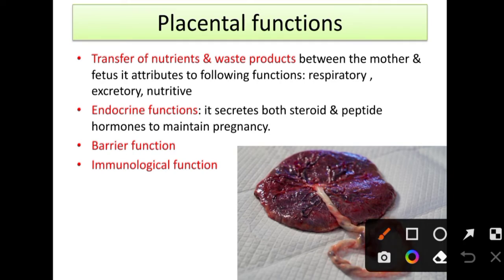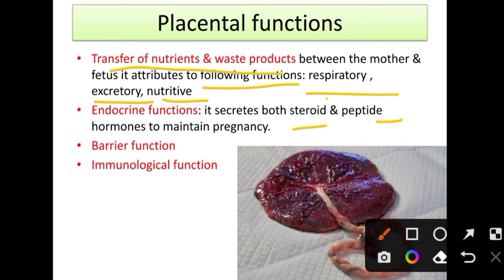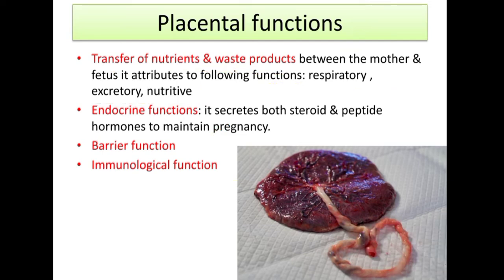The functions of the placenta include transfer of nutrients and waste products between mother and fetus — respiratory, excretory, and nutritive functions. Next is the endocrine function: it secretes both steroid and peptide hormones which help to maintain pregnancy. It also has a barrier function to protect against infection, and an immunological function — certain immunoglobulins can cross the placenta to provide immunity.